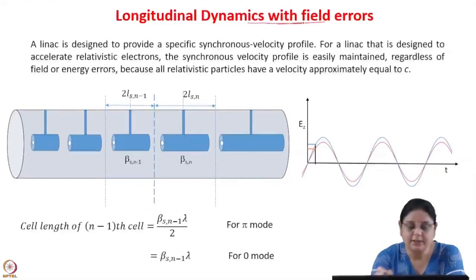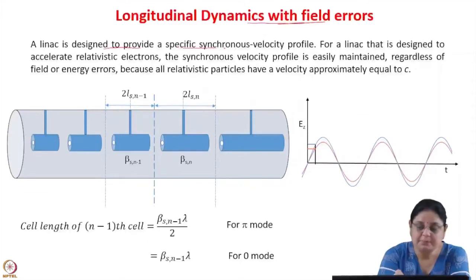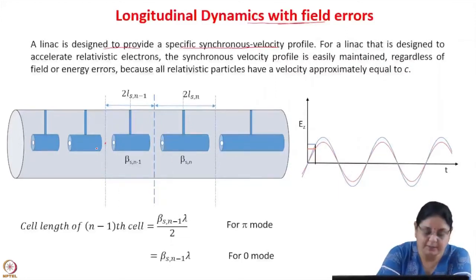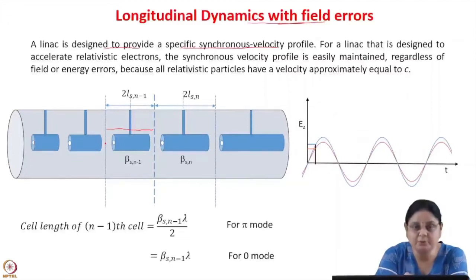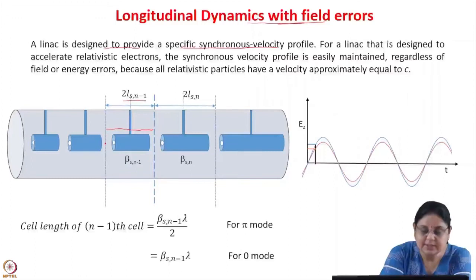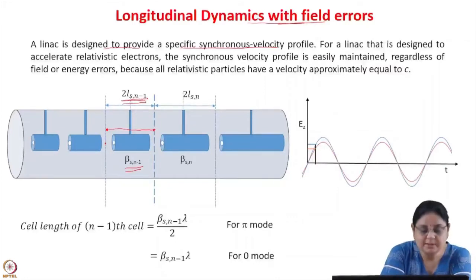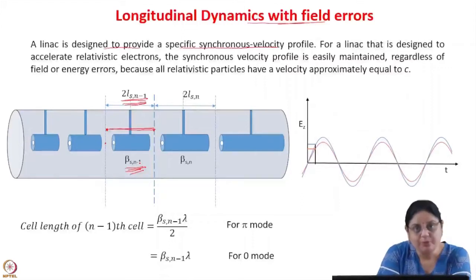Now let us see the longitudinal dynamics with field errors. A linac is designed to provide a specific synchronous velocity profile. The synchronous particle is at the center of a gap, sees the right synchronous phase and the right value of the electric field, gets the right energy gain, and travels from one gap to the next in the designed time. The cell length is beta lambda over 2 for a pi-mode structure and beta lambda for a zero-mode structure, designed according to the synchronous velocity.